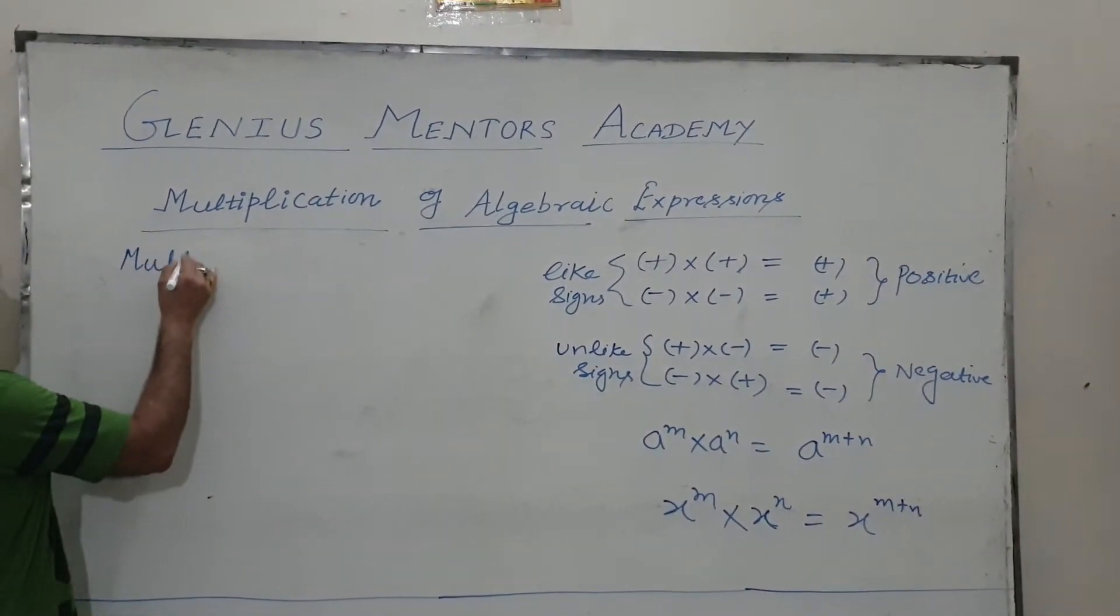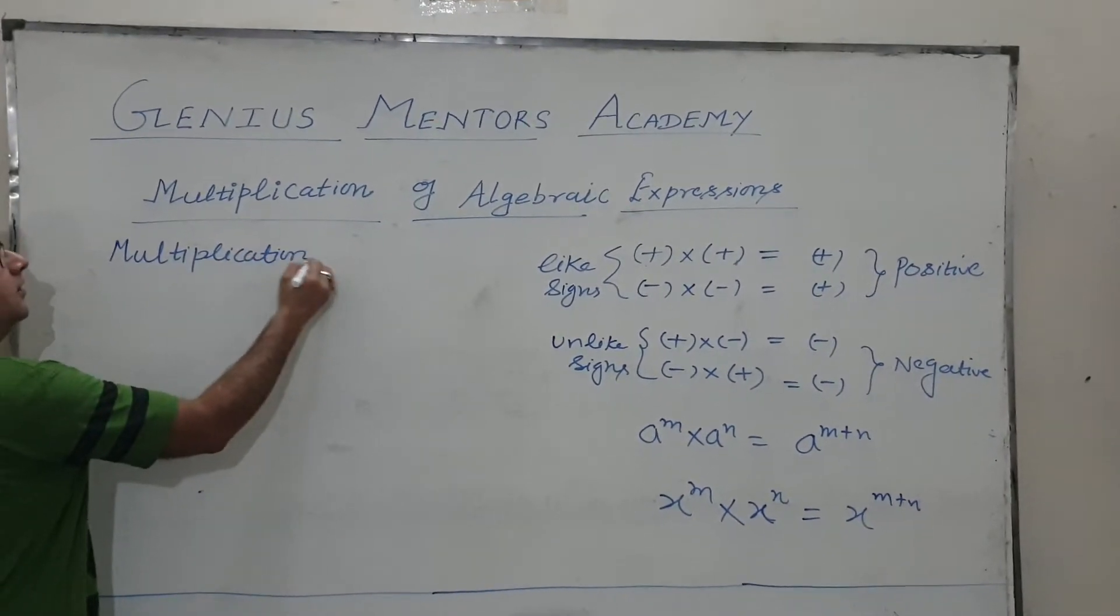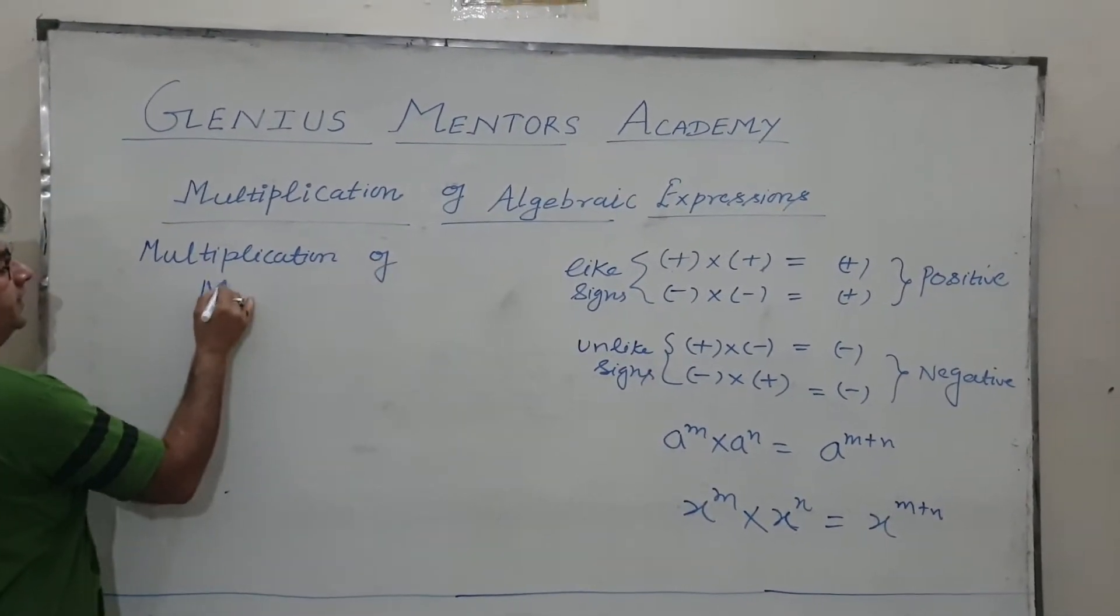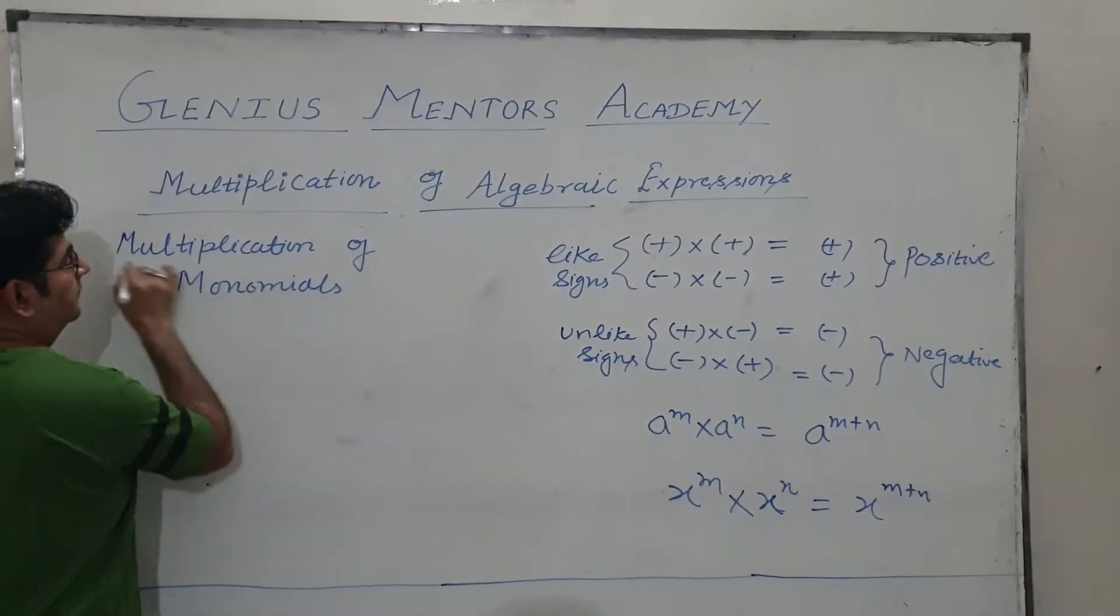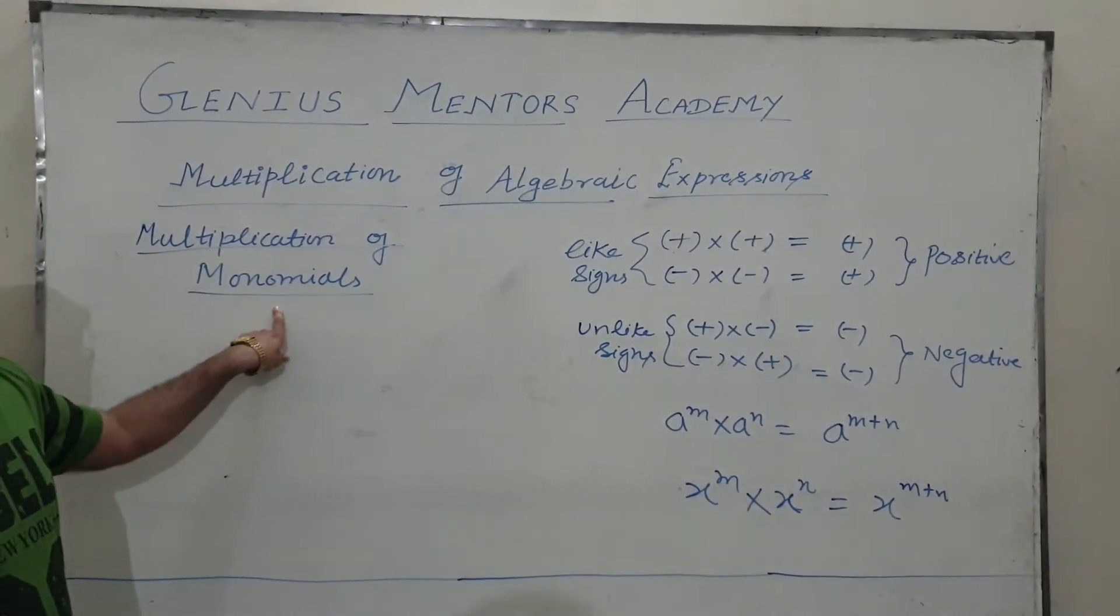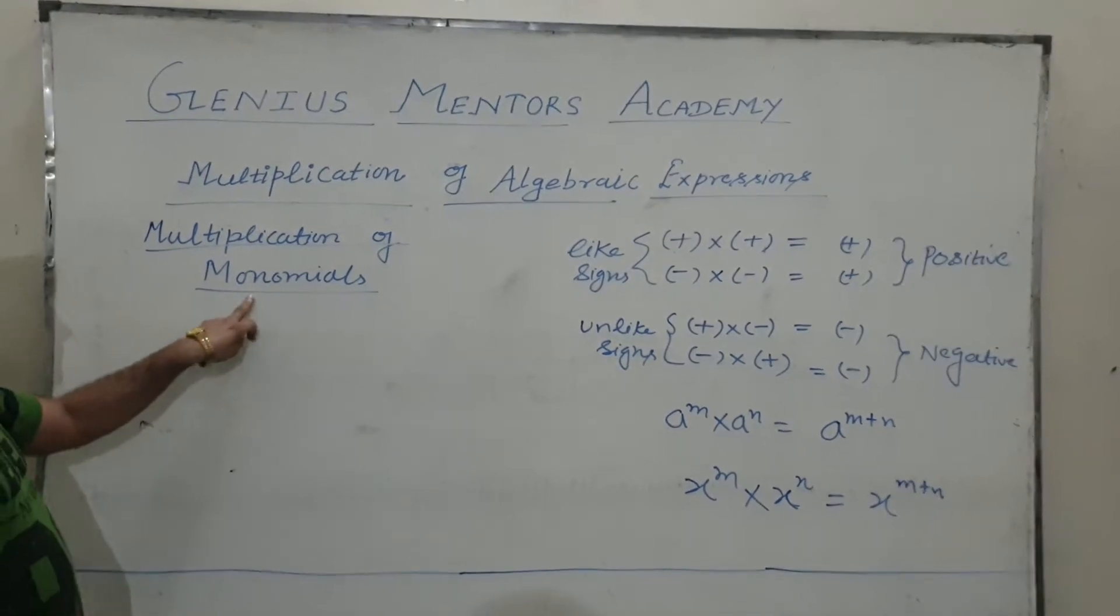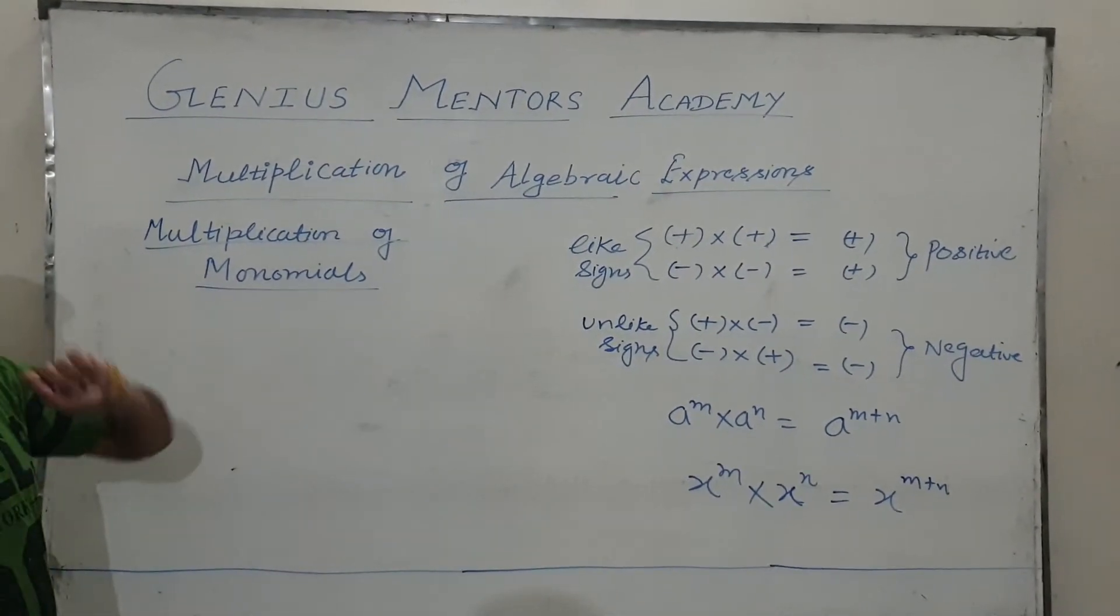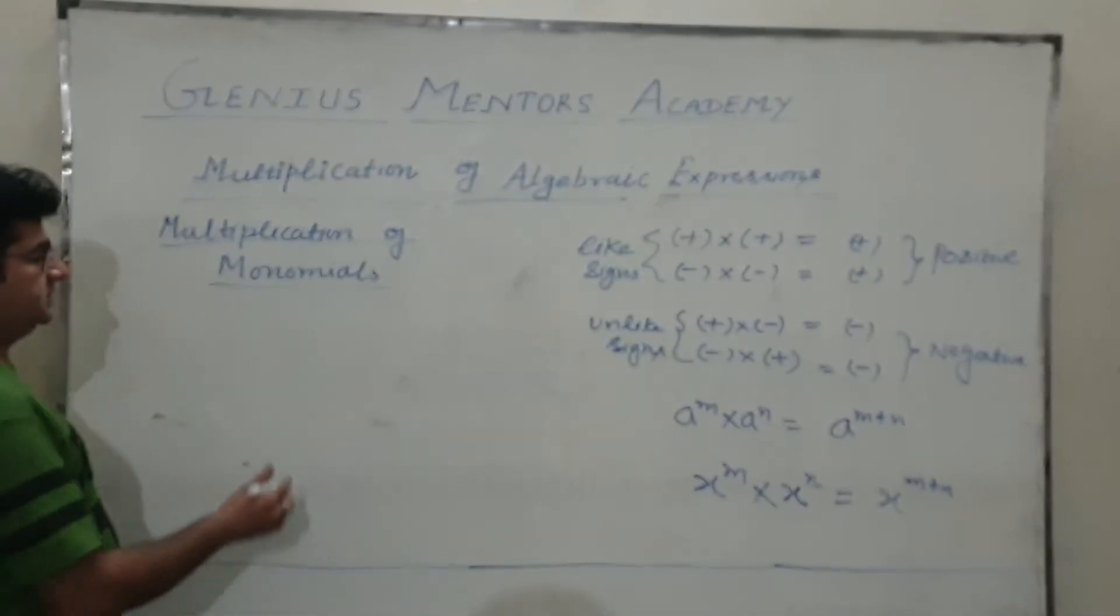Now, multiplication of monomials. We have discussed the monomials, binomials, trinomials in the last videos. Monomial means one term. Among two monomials, we will multiply two monomials.